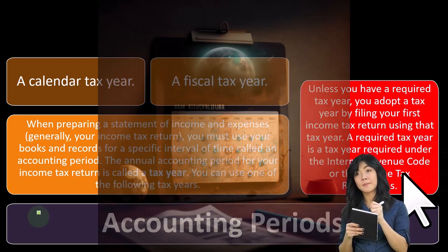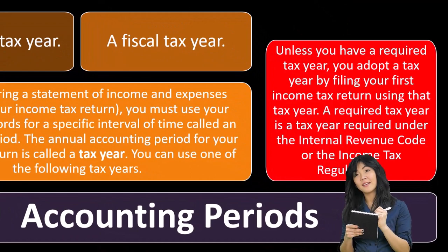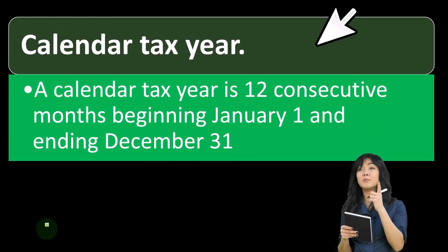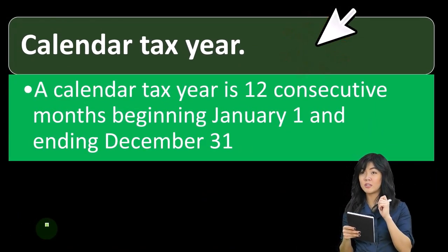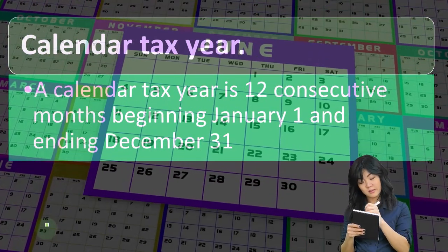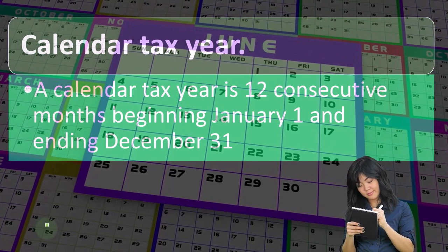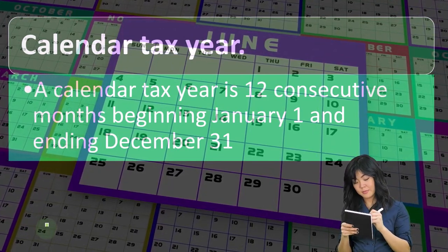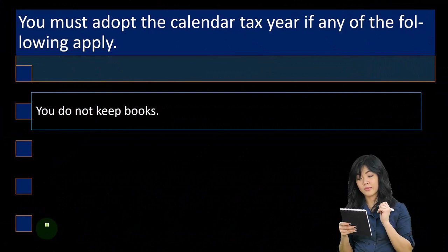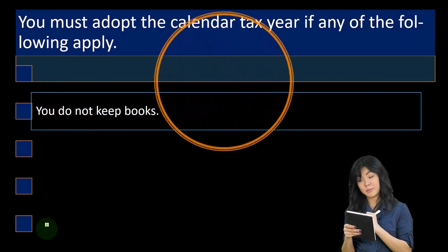A required tax year is a tax year required under the Internal Revenue Code or the Income Tax Regulations. A calendar tax year is 12 consecutive months beginning January 1st and ending December 31st — straightforward, just like it is on a calendar. You must adopt the calendar tax year if any of the following apply.